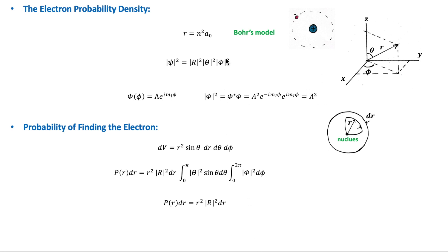The phi part is constant, and calculations show that the radial part does vary with r, the distance from the nucleus, and the variation is different for different combinations of the quantum numbers n and l. Calculations also show that the theta part varies with the zenith angle theta for all quantum numbers l, except for l equals 0, which are the s states.